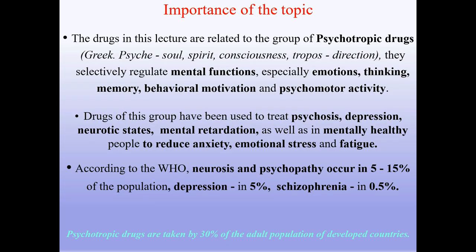The drugs in this lecture are related to the group of psychotropic drugs. From Greek: 'psyche' meaning soul, spirit, consciousness, and 'tropos' meaning direction. They selectively regulate mental functions, especially emotions, thinking, memory, behavioral motivation, and psychomotor activity. Drugs of this group have been used to treat psychosis, depression, neurotic states, and mental retardation, as well as in mentally healthy people to reduce anxiety, emotional stress, and fatigue.